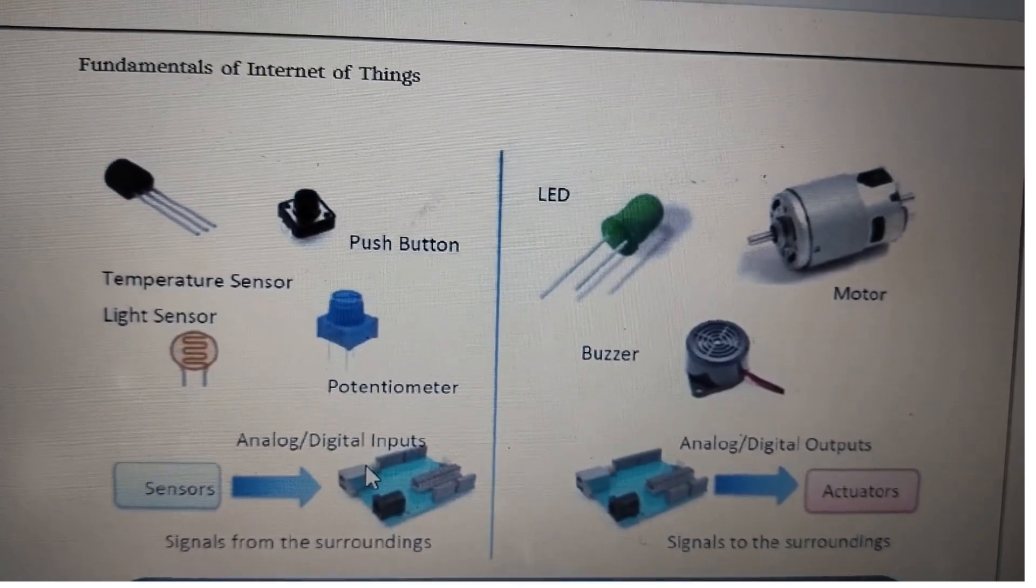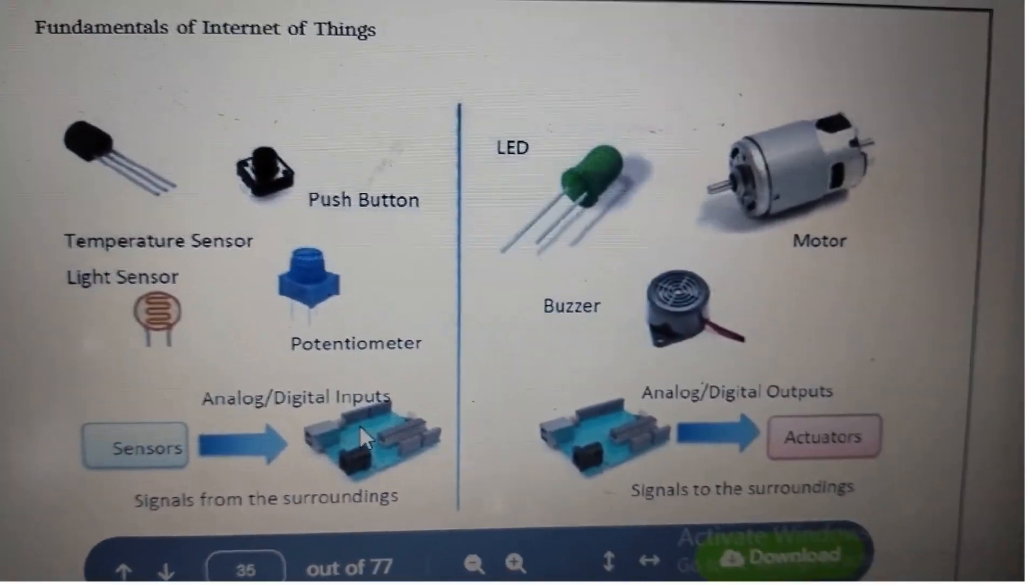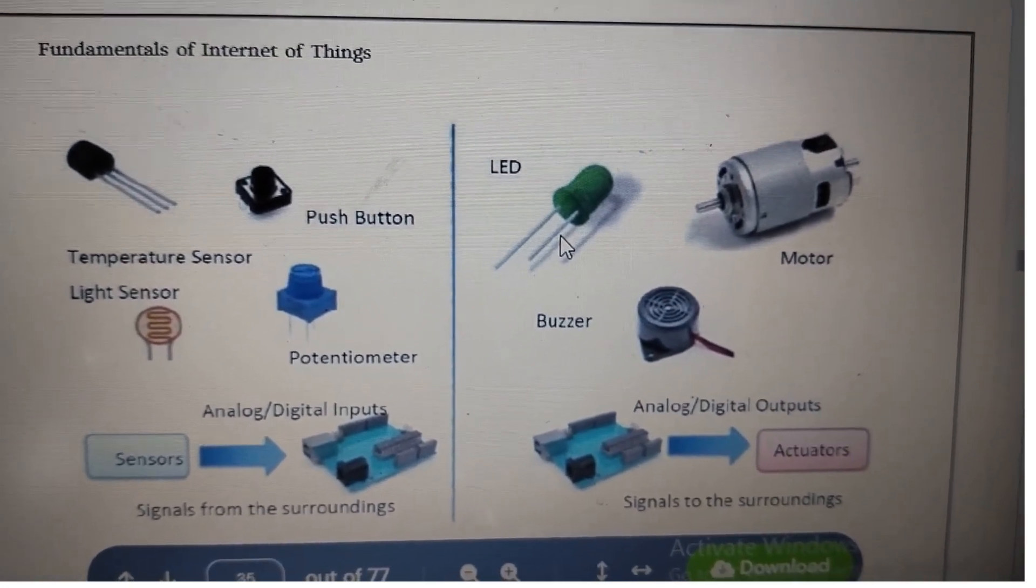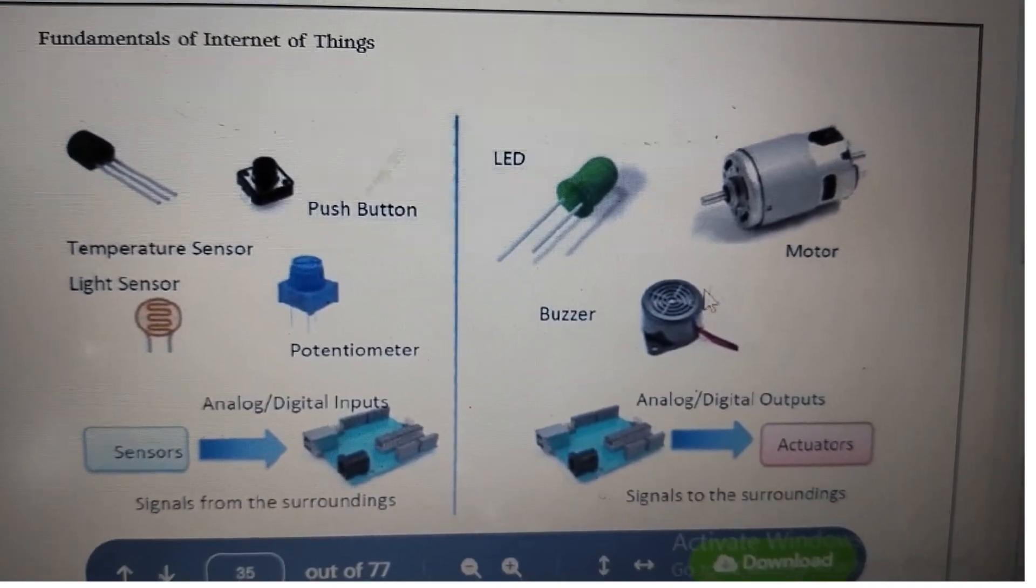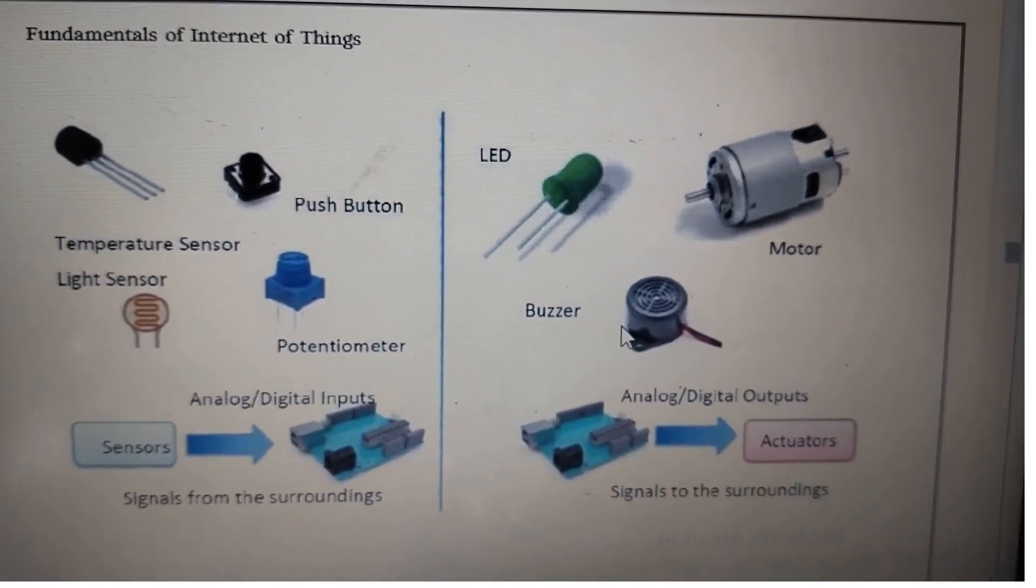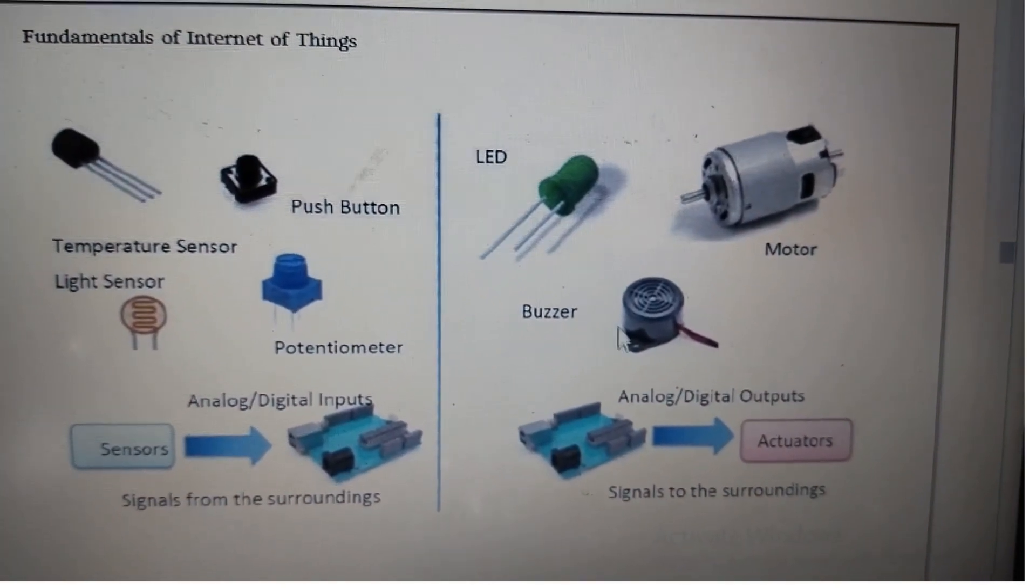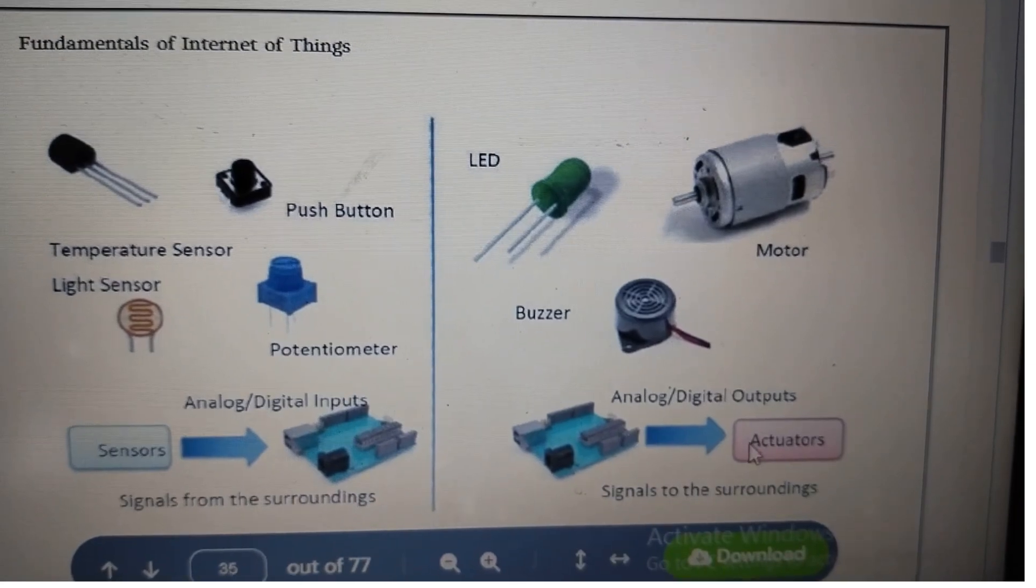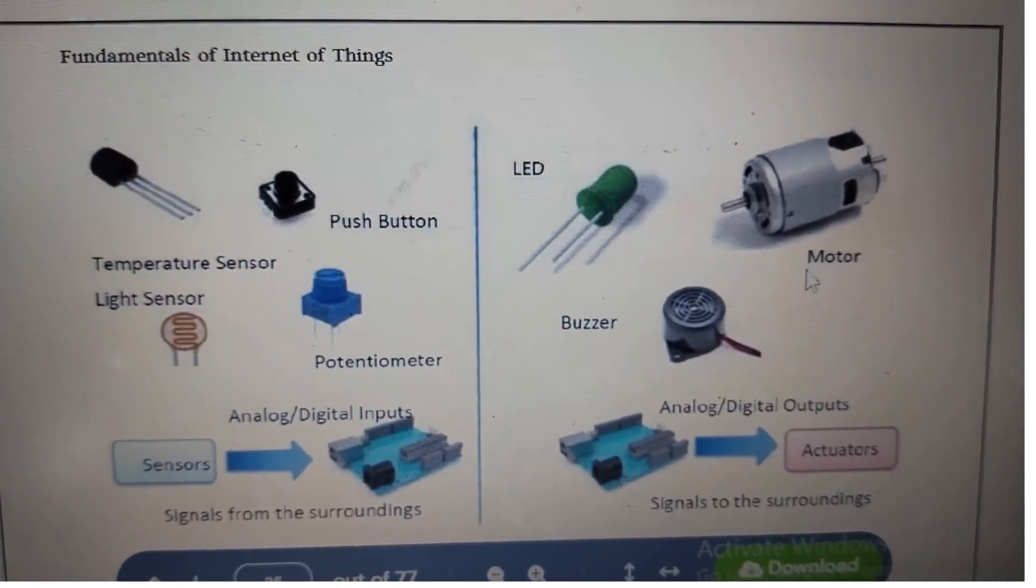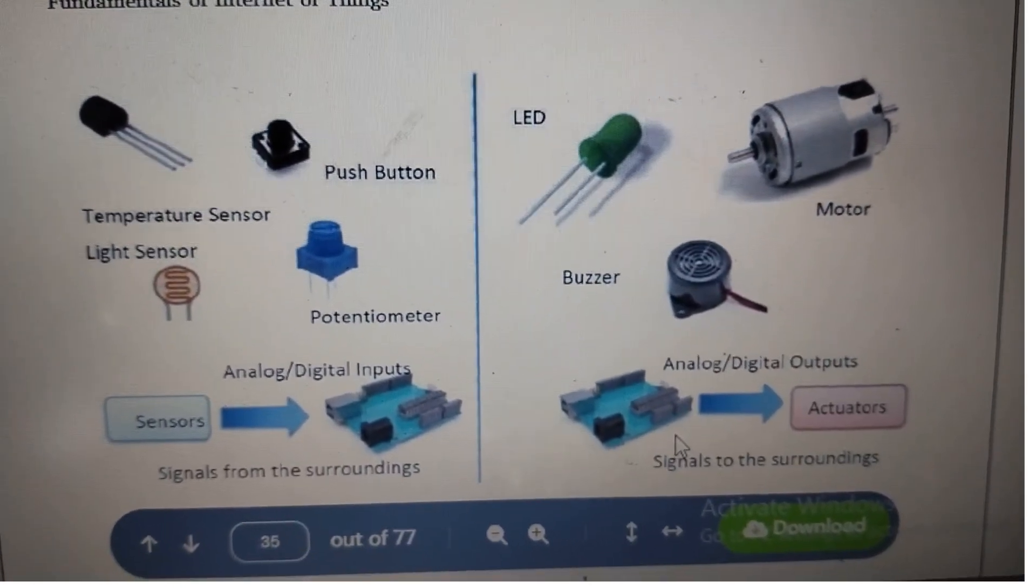What about LEDs? The LED light is an actuator. Motors and buzzers are also actuators. When you press the buzzer, it generates a signal. These four are different types of sensors, and these are actuators.